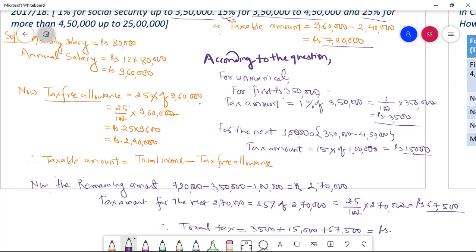Need to pay by the unmarried person if their annual income is, monthly salary is eighty thousand and tax free allowance is twenty five percent of this.